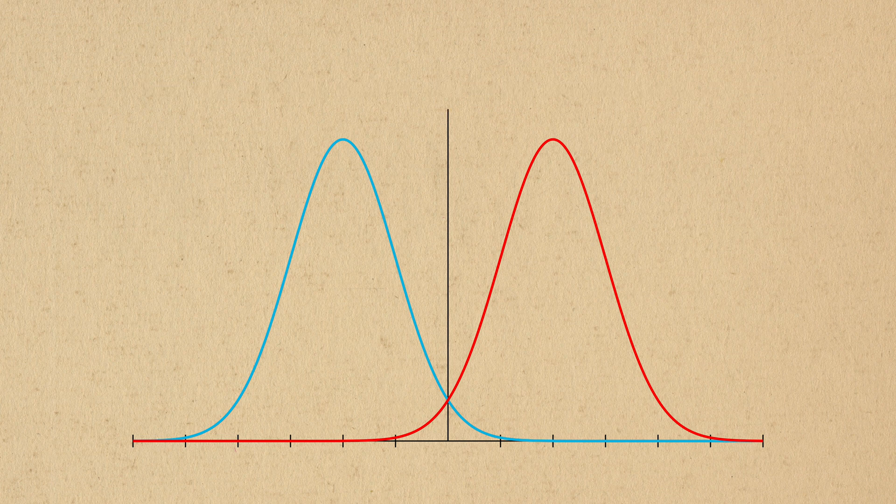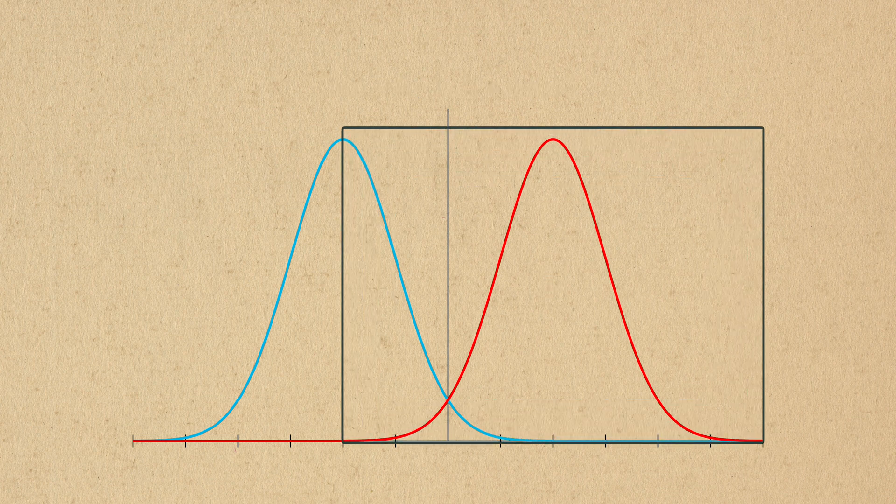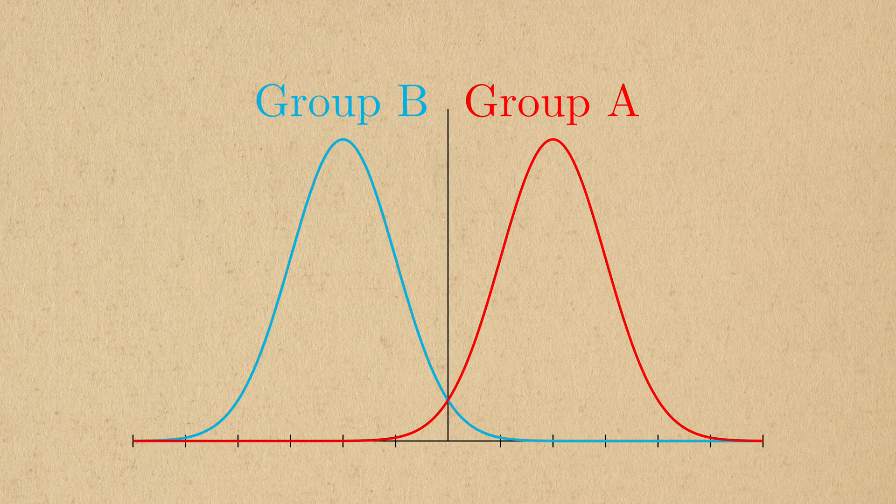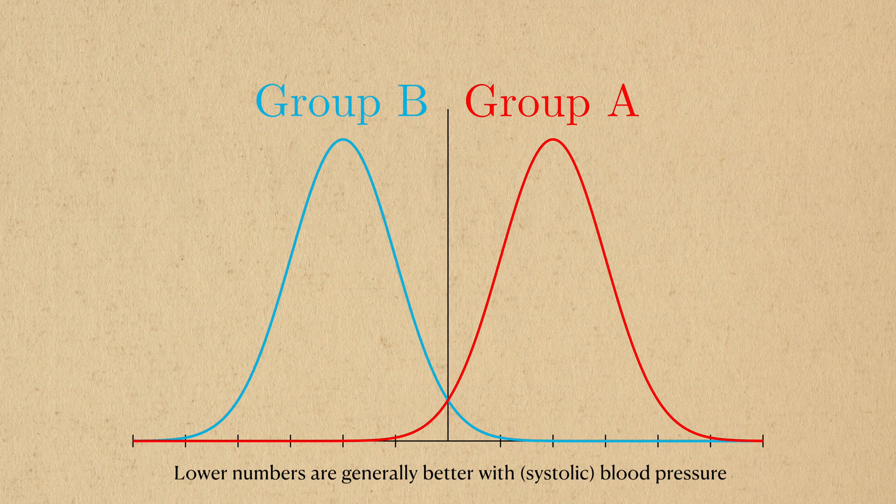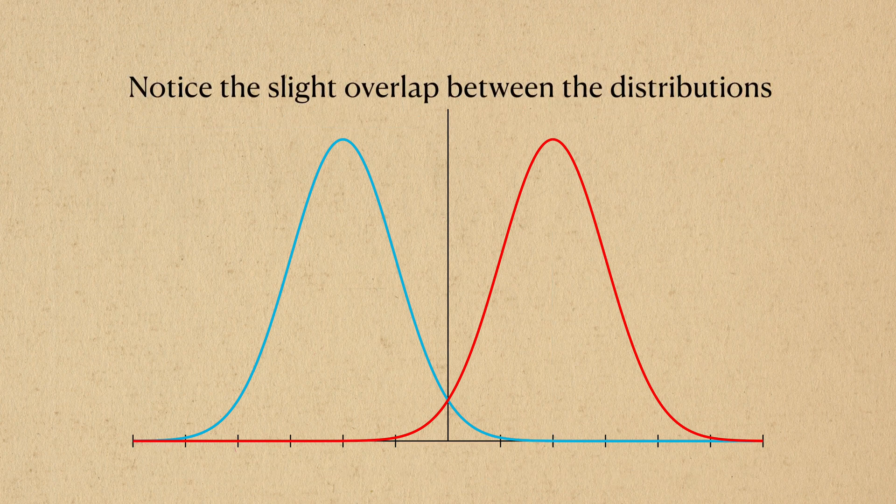I mentioned earlier that it's more difficult to compare two things if they're random. What did I mean by that? Let's say that this PDF represents the range of blood pressures and associated densities that we might observe for one group, which we'll call group A. Then let's say that group B is slightly healthier than group A. For blood pressure, this means that lower values are better. For this example, let's say that the PDF for group B's blood pressure looks like this. Notice that they're mostly separate, but there's still a little bit of overlap.